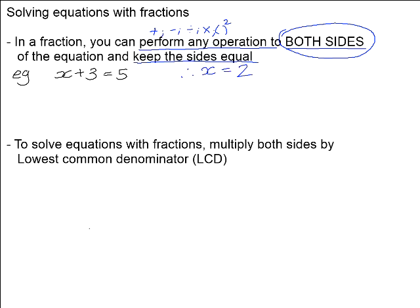Let's say that I decide to subtract 6 from both sides of the equation. So if I take x plus 3 equals 5 and minus 6 from both sides, is my value of x still equal to 2? Let's check: 2 plus 3 is 5, and 5 minus 6 is negative 1. On the right-hand side, 5 minus 6 is also negative 1. So yes, my value of x is still equal to 2. Had I only subtracted 6 from the left-hand side, I would have had negative 1 on the left and positive 5 on the right, and x would no longer be the same. It was kept exactly the same because we subtracted 6 from both sides.